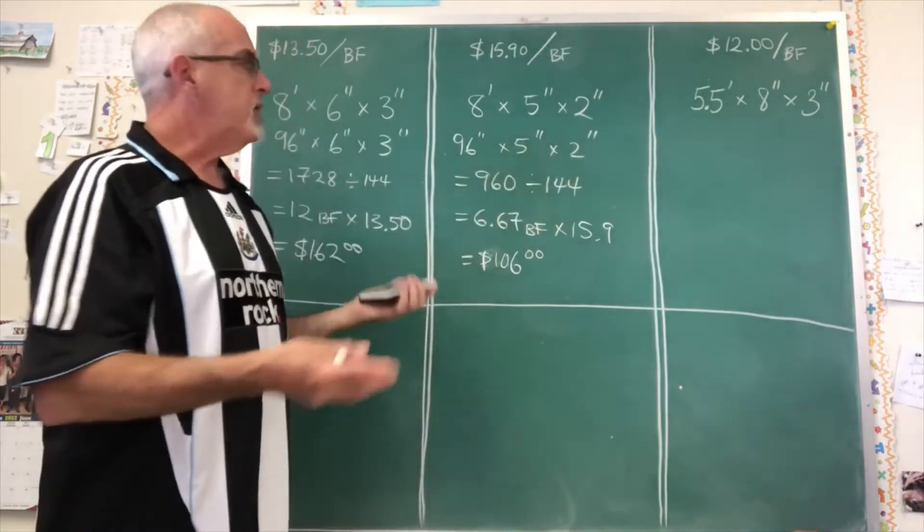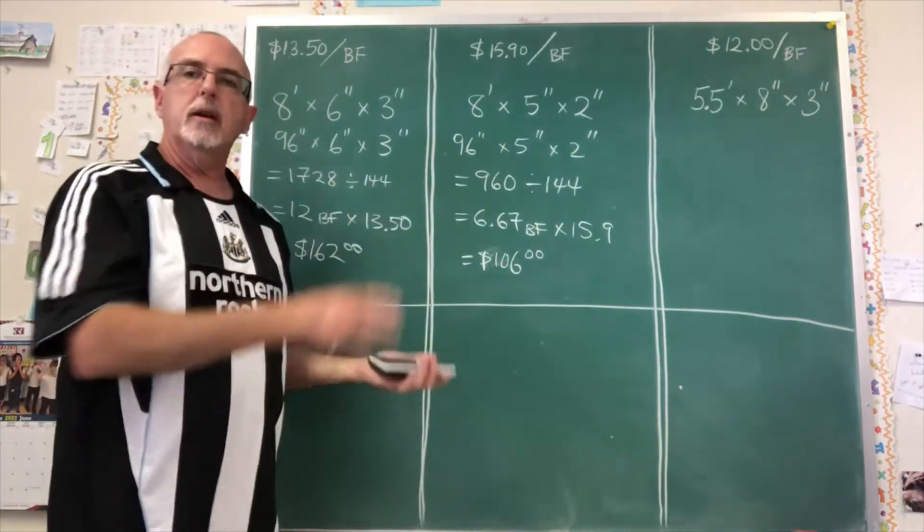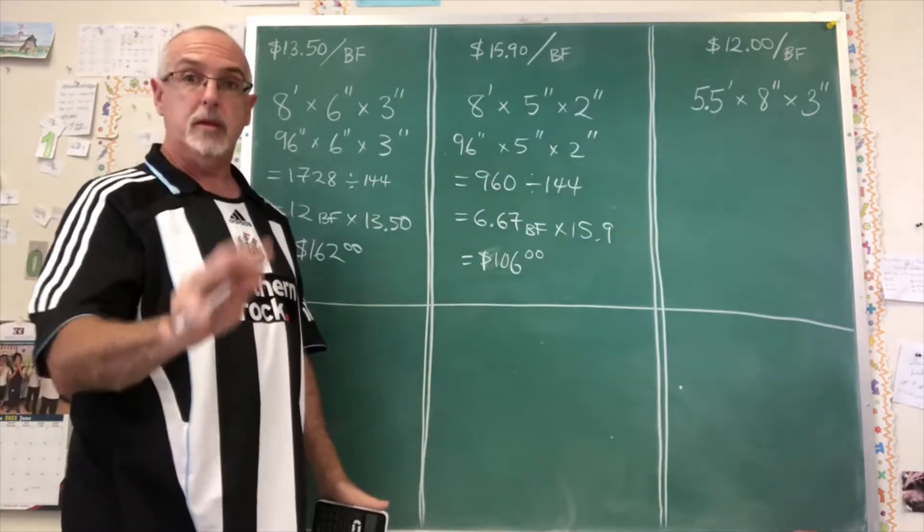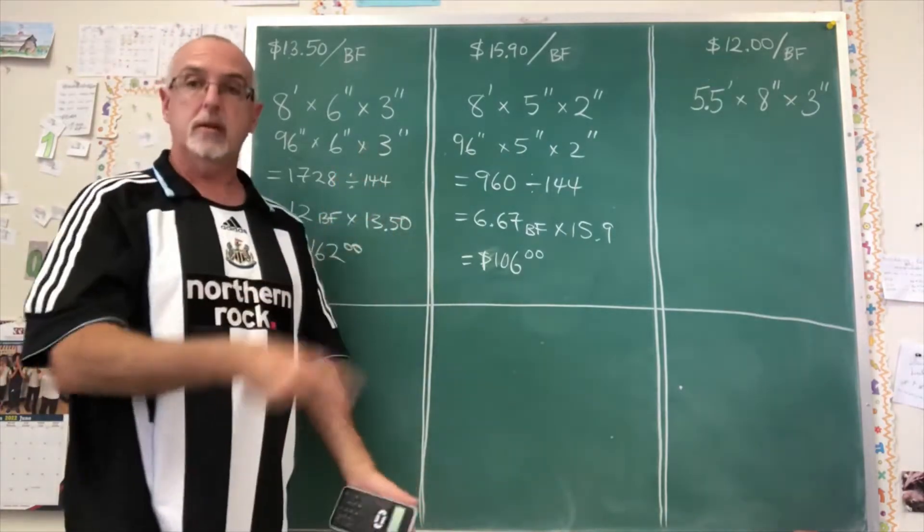So if you go and you see several boards and one of them is one inch thick, another one is three inch thick, don't be surprised that the three inch thick board costs a lot more.